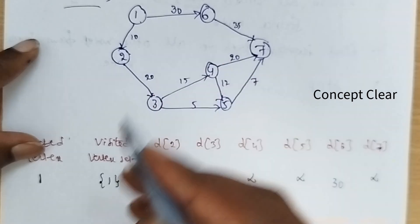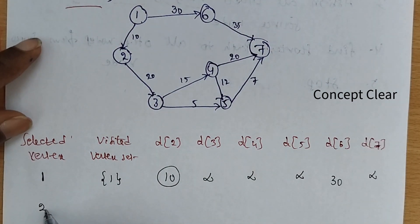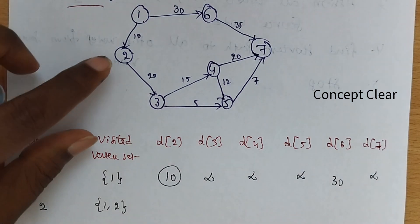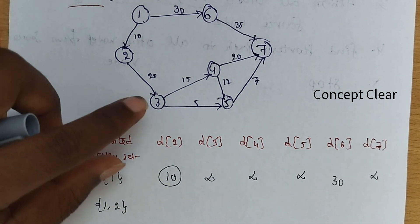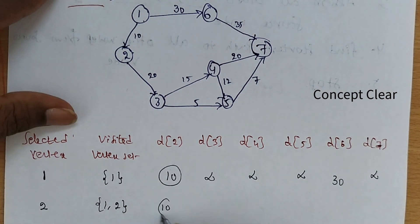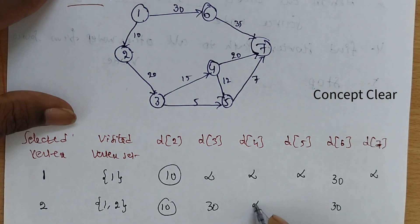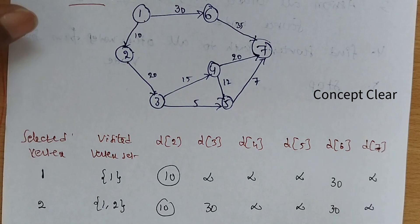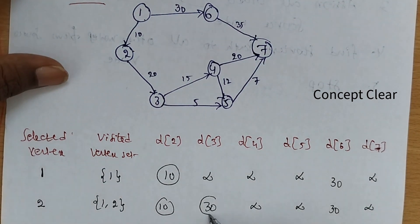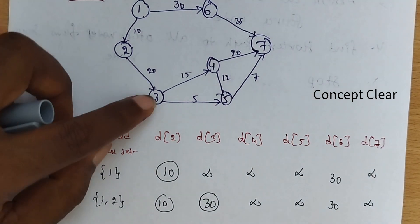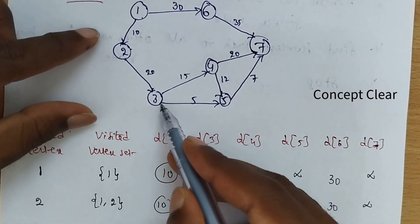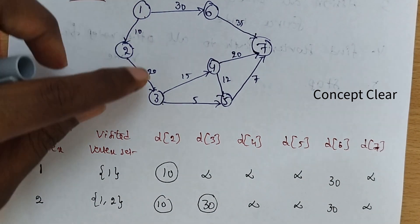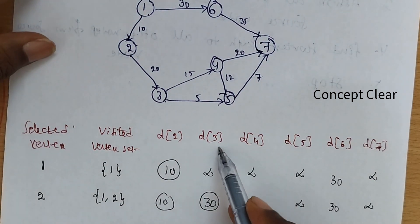We are moving from 1 to 2, so the second selected visited vertex is 2. Visited: 1 and 2. The possibilities from vertex 2: 2 to 3 has cost 20. So 1 to 2 is 10, here also 30, here also 30, remaining infinity. We are selecting 30 because 1 to 2 is 10 plus 2 to 3 is 20 equals 30. So the cost from 1 to 3 is 30.